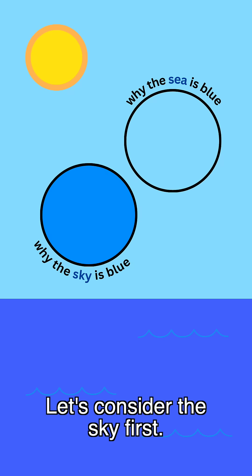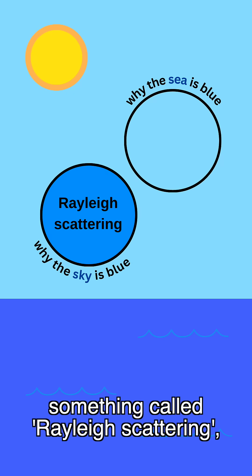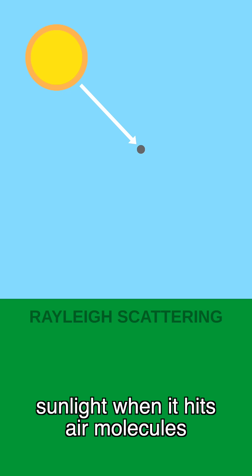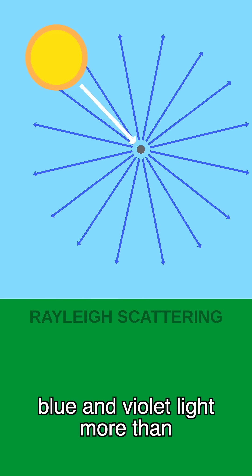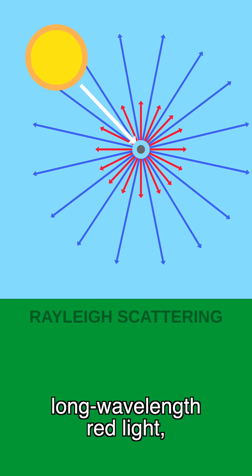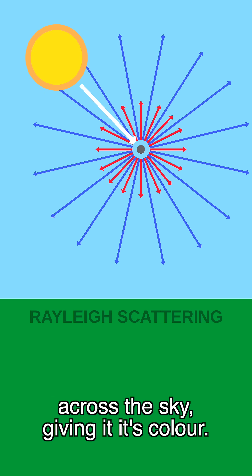Let's consider the sky first. The sky is blue because of something called Rayleigh scattering, which refers to the scattering of sunlight when it hits air molecules and other small particles present in the atmosphere, which scatter short wavelength blue and violet light more than long wavelength red light, causing this blue light to spread across the sky, giving it its colour.